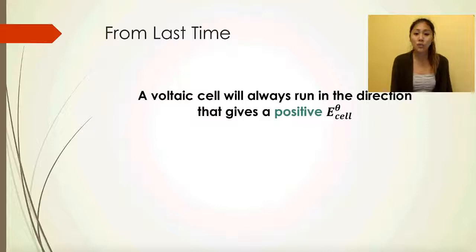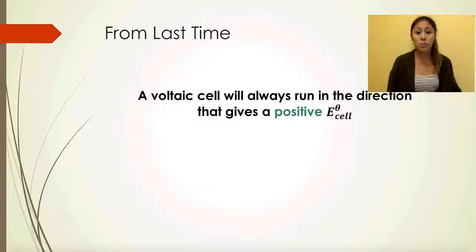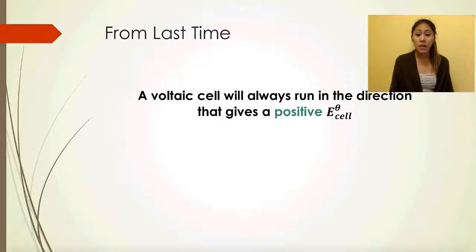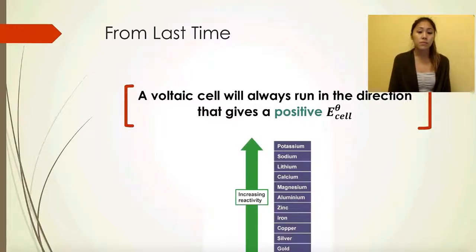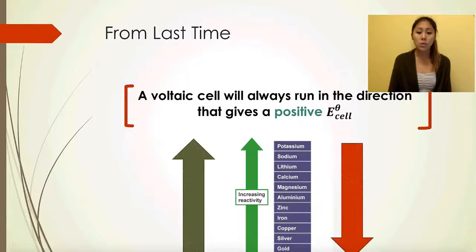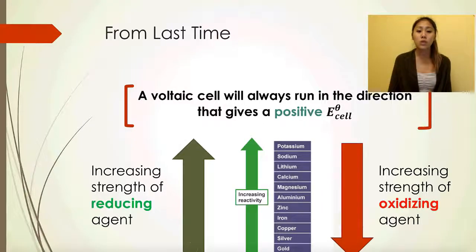From last time, recall that a voltaic cell will always run in the direction that gives a positive standard potential difference of a cell — meaning it's always going to be a spontaneous reaction. As we look at the reactivity series and go up, it increases the strength of the reducing agent, which is the one being oxidized.